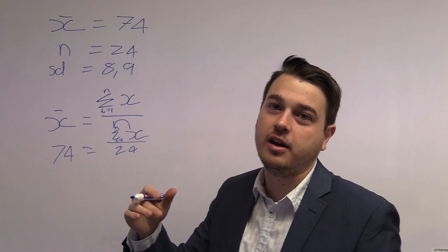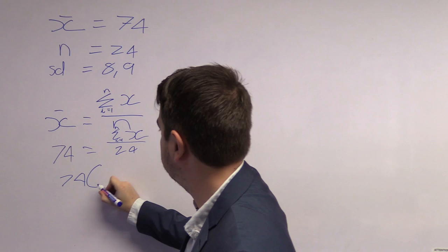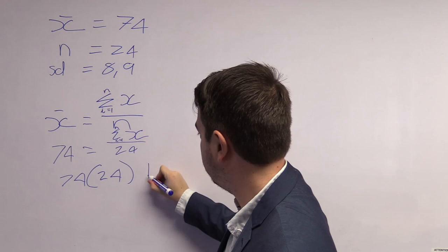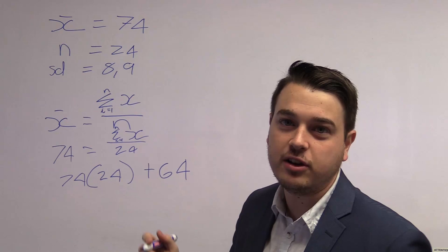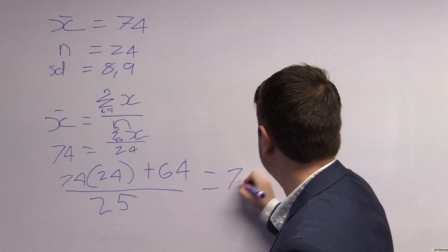It becomes 74 times 24 plus 64 for the new student, divided by 25. The answer we get is 73.6, which is lower than the 74 we had initially. This proves what we said in question A, that the average does decrease.